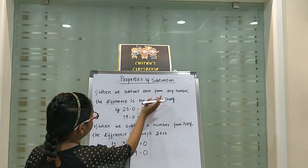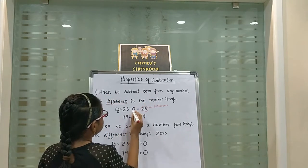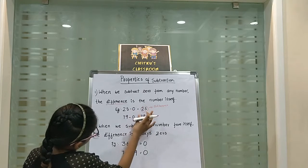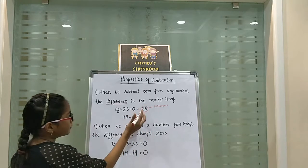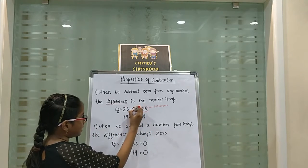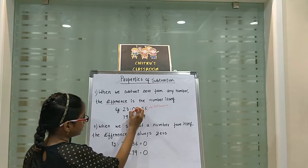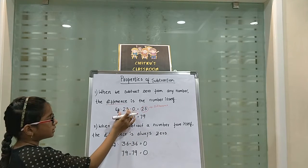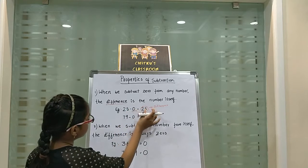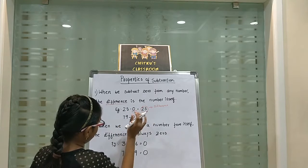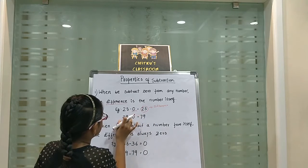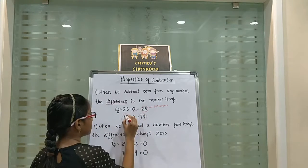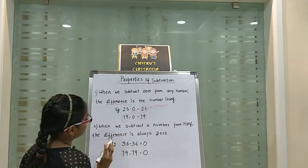When we subtract 0 from any number, we are subtracting 0 from this number, and the difference is the number itself. We have nothing to subtract since 0 means none. So, 25 minus 0 is equal to 25, and 79 minus 0 is equal to 79. It's the number itself, not 0.